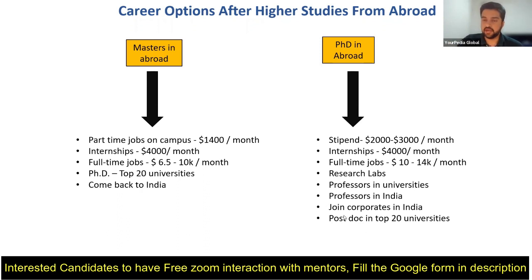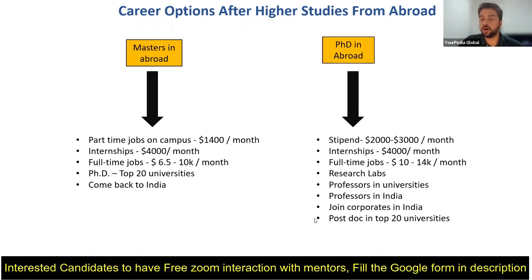As a last option, if you're not getting anything else, you can always go for a post-doc at a top-20 university. This is actually the most common career trend that PhD graduates are adopting in the US after their PhD. That's pretty much what I wanted to discuss in this video. I'll come up with new content in the next video — thank you.